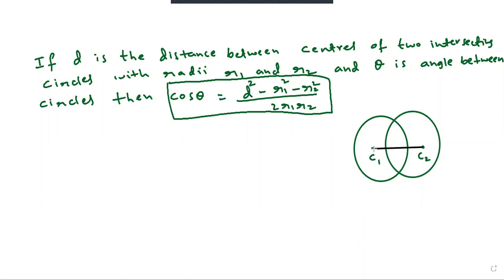This line is D. What is D? Distance between centers. And R1, R2 are radii.